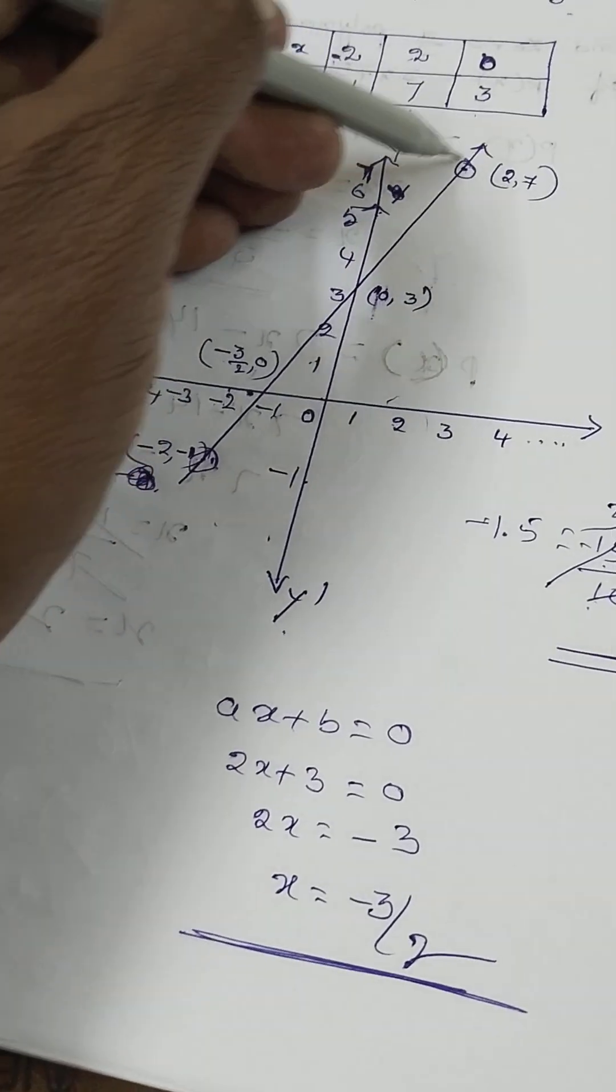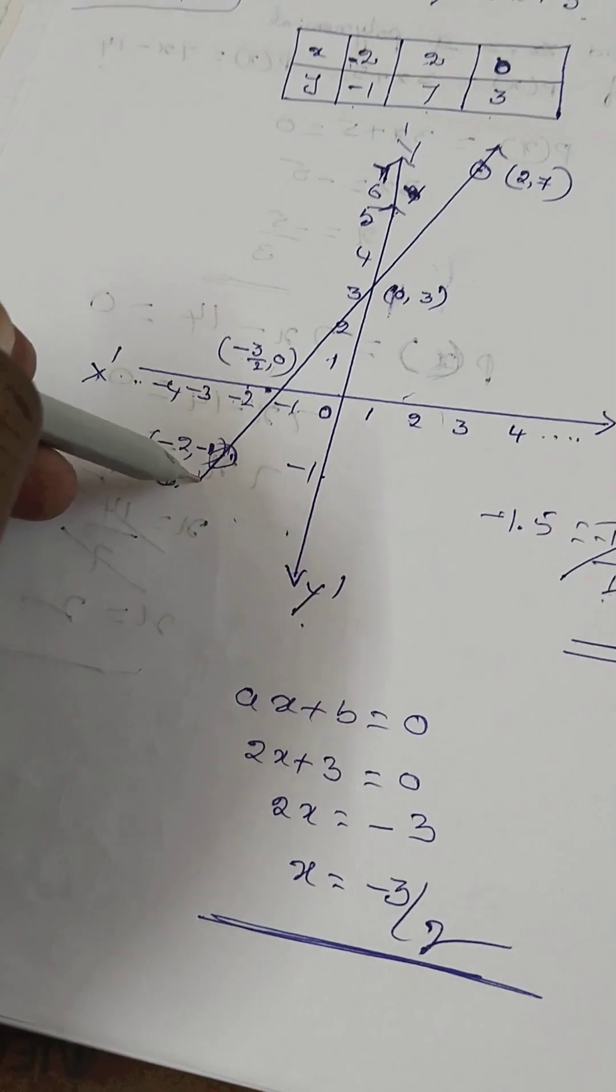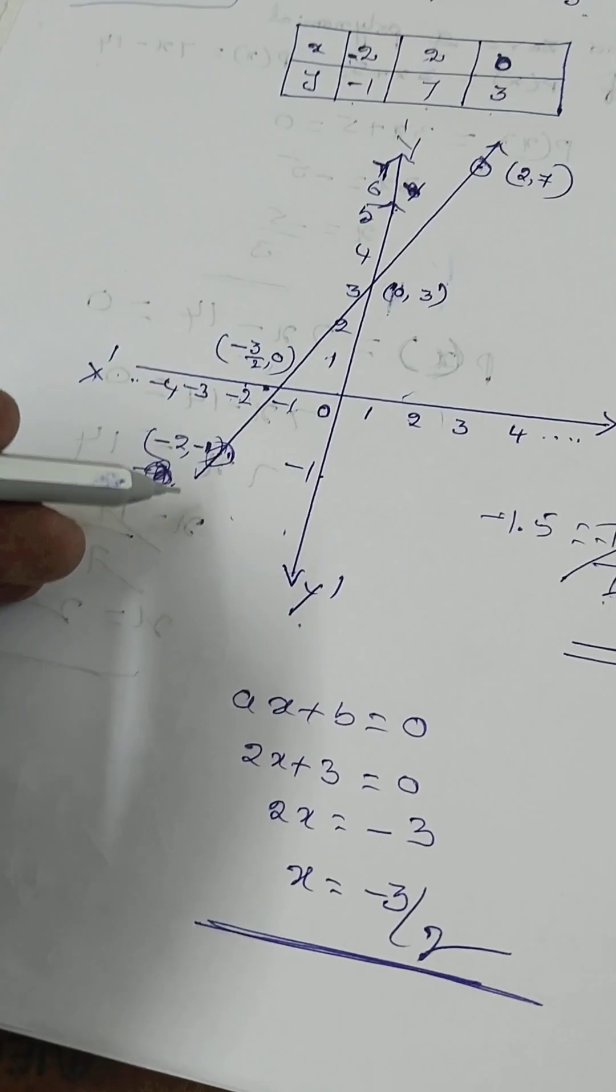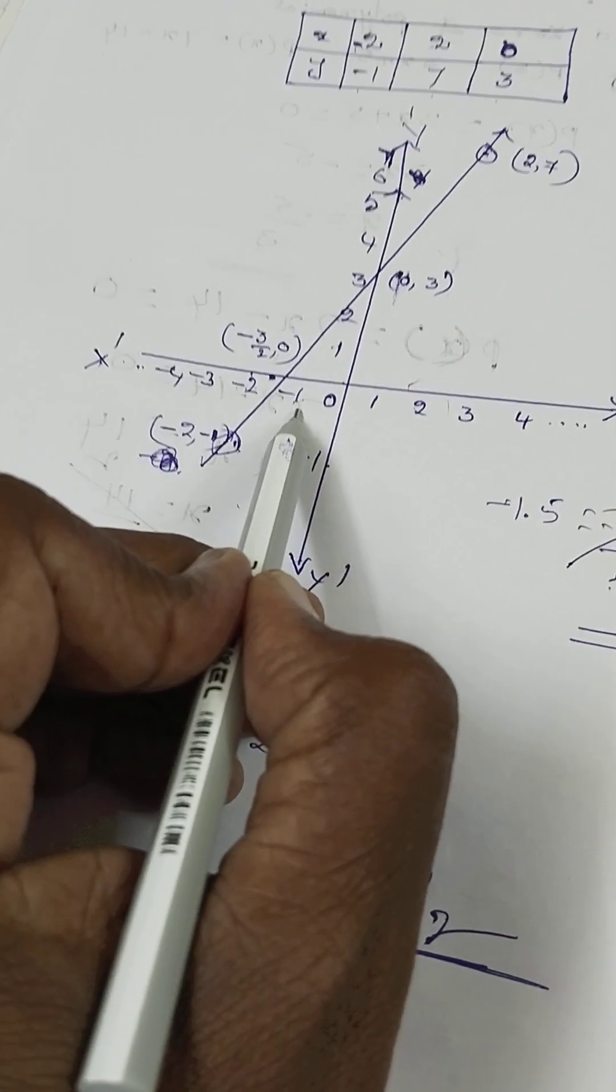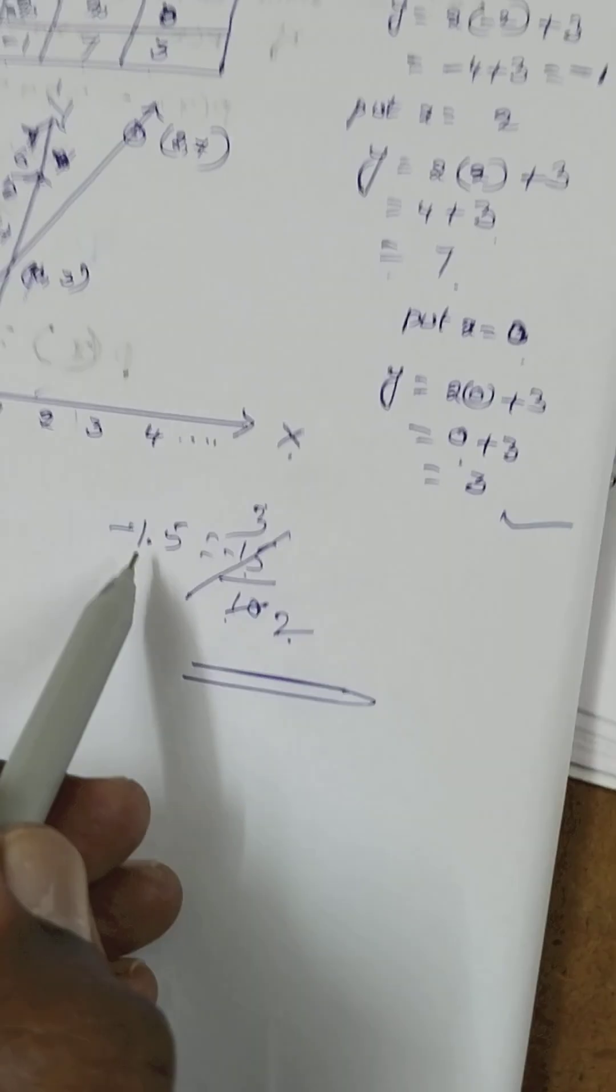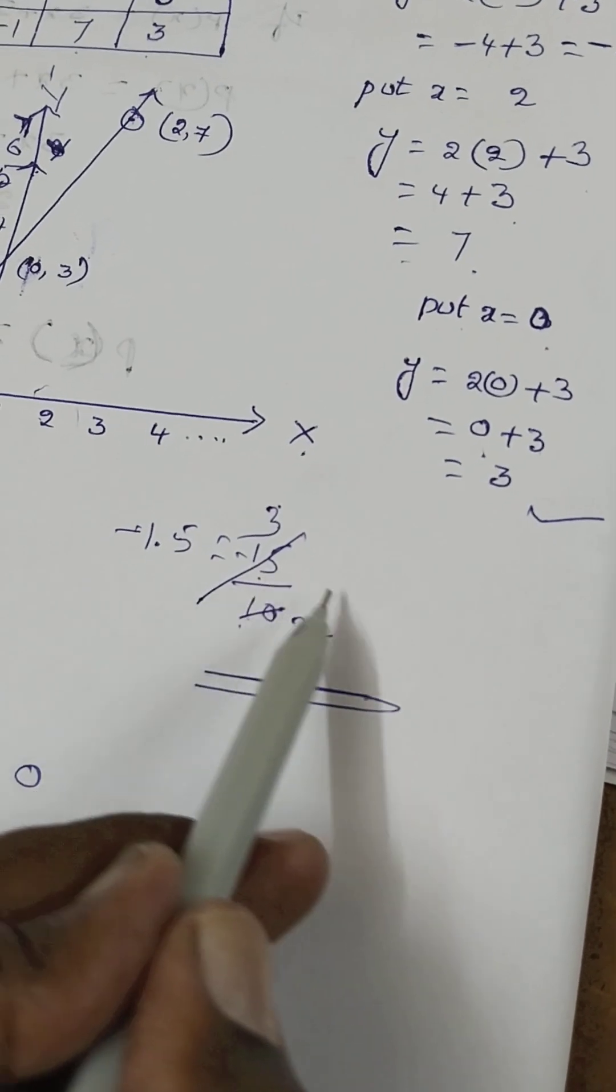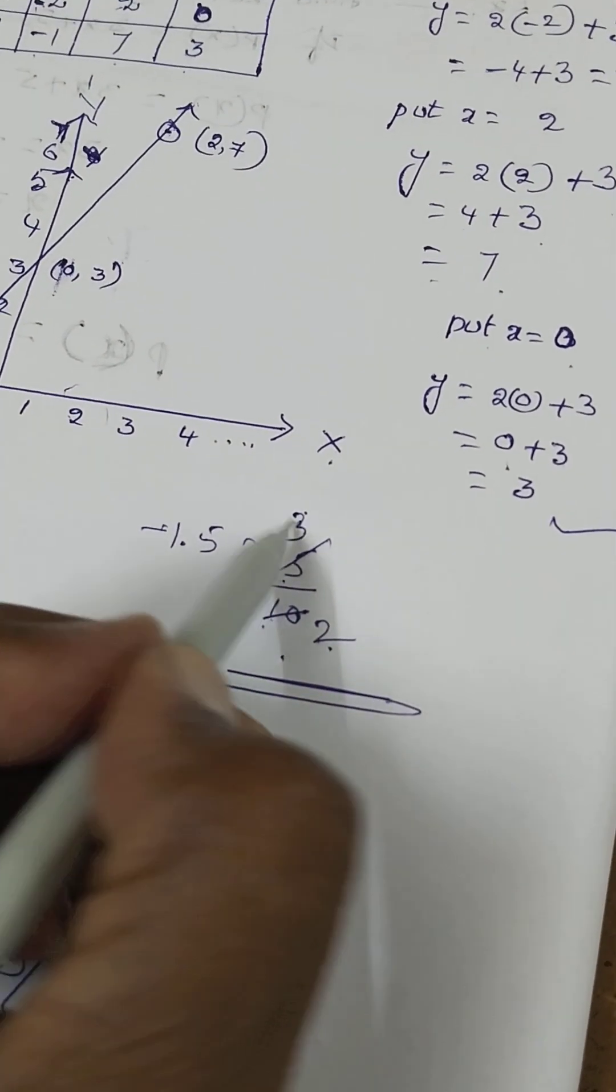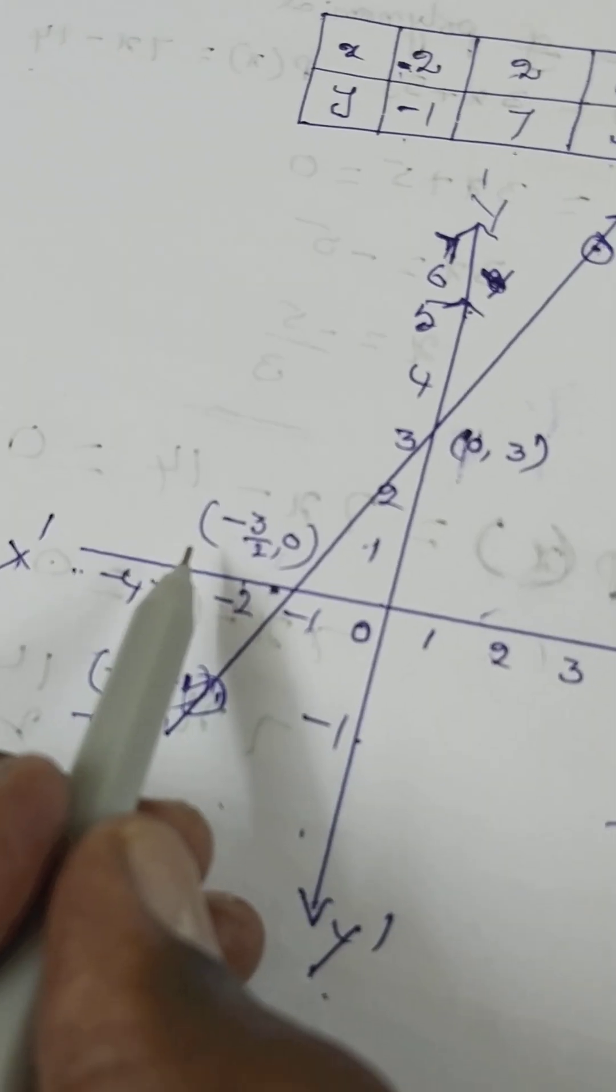Now draw the line where the x-axis intersects. Here the x-axis and line intersect at minus 1.5, which is minus 3 by 2.